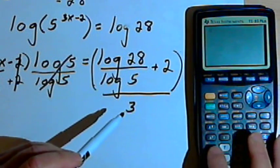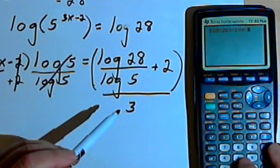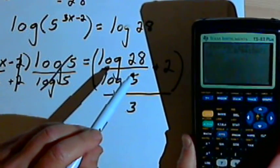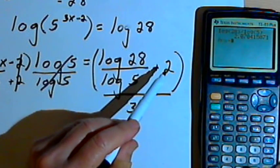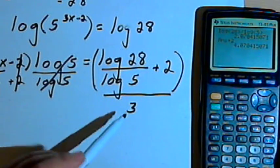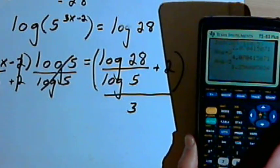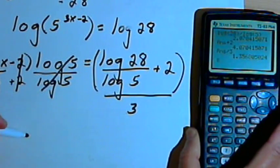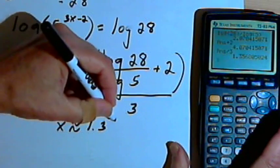So I'm going to have the log of 28 divided by the log of 5. Let's find out what that equals first — that's approximately 2.07. Then we'll add the 2 to it, so that's approximately 4.07. And then we'll take that and divide it by 3. That's 1.3568, and we'll round that to 1.36. So x equals approximately 1.36.